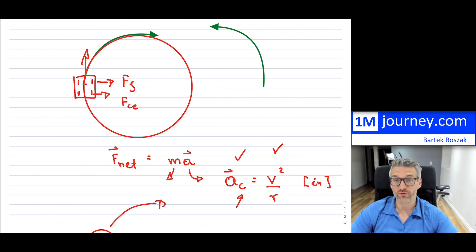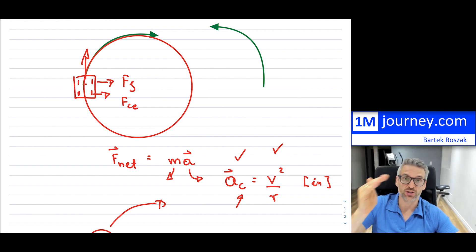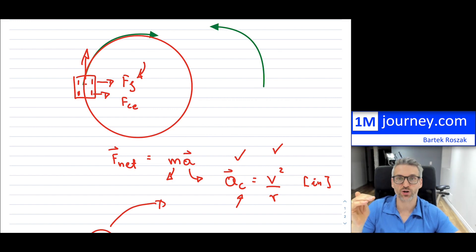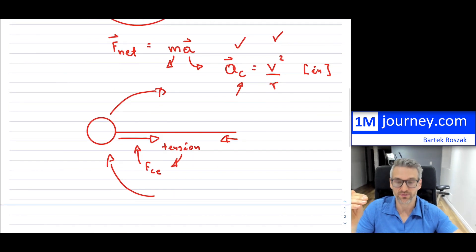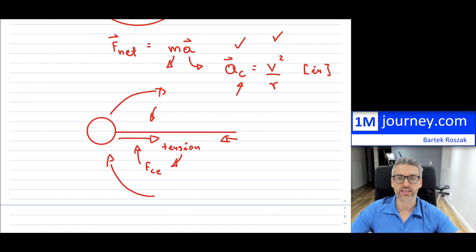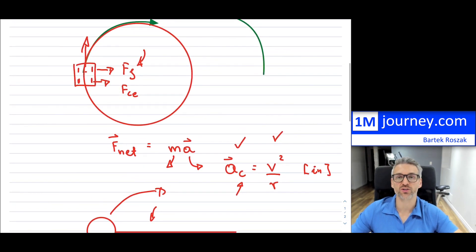Centripetal forces are all the forces keeping us on and allowing us to continue on that circular path. If the force isn't strong enough, you won't be able to make the turn — you'll start to skid away. Similarly, if the string tension breaks, the ball won't continue in circular motion; it will just go straight, back to Newton's first law, because no force is keeping it in that loop. Tension and friction are the centripetal forces keeping objects in that circular path.